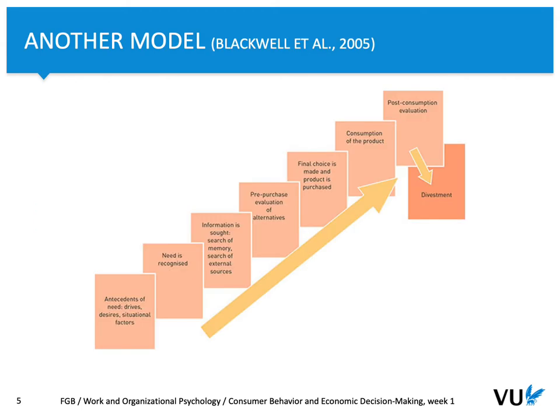In the textbook, you can also find a more complex model by Blackwell and colleagues, published in 2005. As you can see, this model takes into account more elements. It considers that what precedes information collection are two elements: antecedents of drive, desires, and situational factors. To some extent, this model focuses on external factors — not those factors within a person, but rather outside this person.